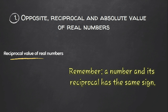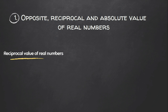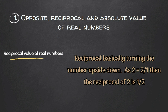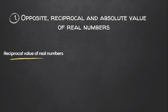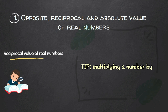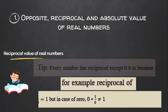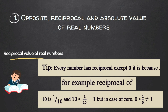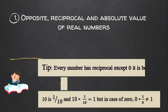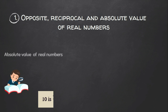The reciprocal of two is one divided by two. Similarly, the reciprocal of three over four is four over three, the reciprocal of one over eight is eight, and the reciprocal of minus four is minus one over four.